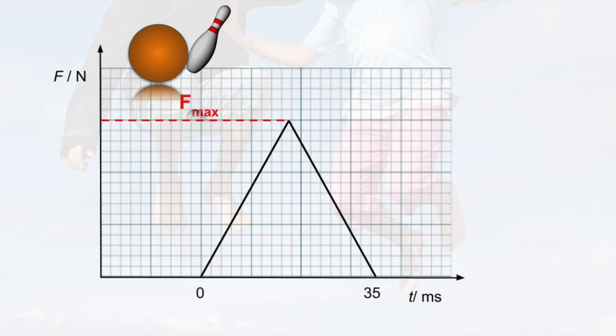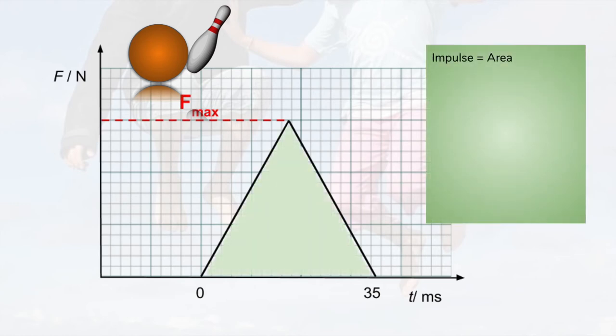Now we add the measurements we know. The time that the interaction lasted is 35 milliseconds. We're going to use the area of the triangle to calculate the maximum value of the force the ball exerts on the pin. We know that the area is the impulse, which is the change in momentum of the pin. And this is mass times change in velocity, which is 10.5 kilograms meters per second.